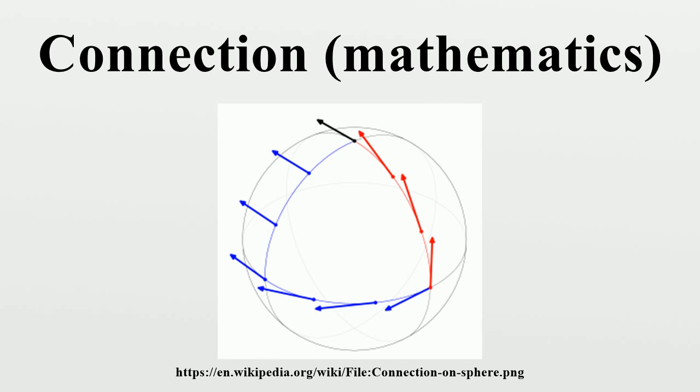There are a variety of kinds of connections in modern geometry, depending on what sort of data one wants to transport. For instance, an affine connection, the most elementary type of connection, gives a means for transporting tangent vectors to a manifold from one point to another along a curve.